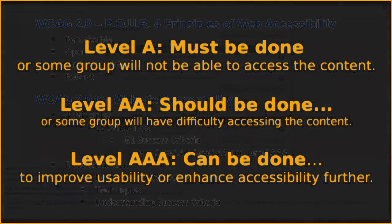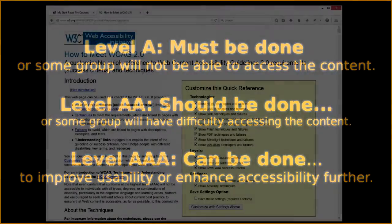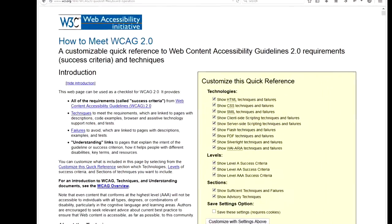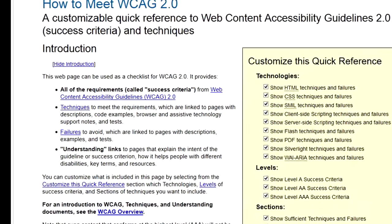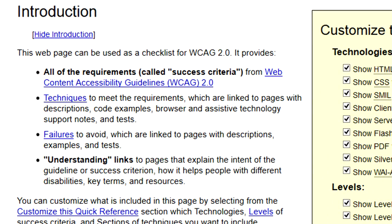Level AA should be done, or some group will have difficulty accessing the content. Level AAA can be done to improve usability or enhance accessibility even further. It is version 2.0 of the Web Consortium's Accessibility Guidelines, or WCAG 2.0, that both declares the standards we must meet here in Ontario, and tells us precisely how to succeed in achieving them.